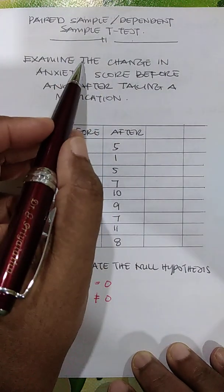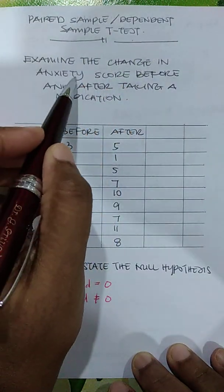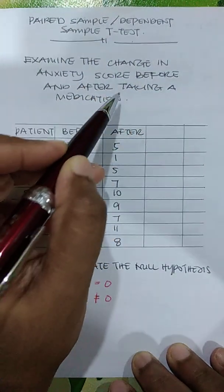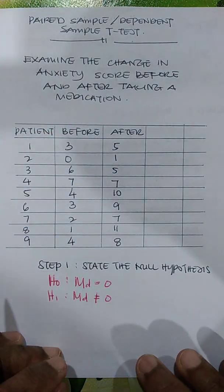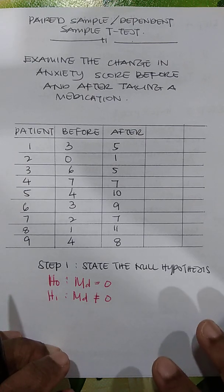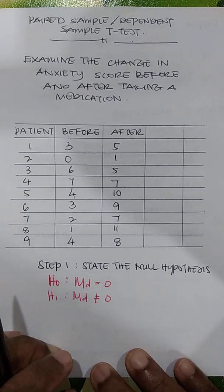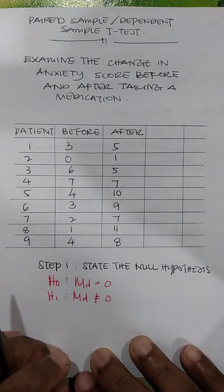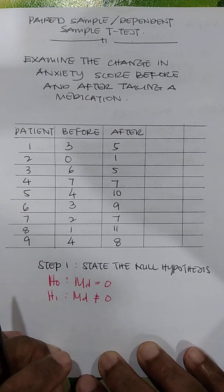Let's say that a researcher is interested to examine the change in anxiety score before and after taking medication. There was a group of patients and a psychiatrist would like to examine if taking a particular drug would reduce the patient's anxiety level.